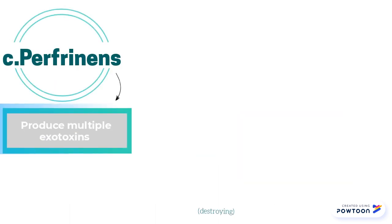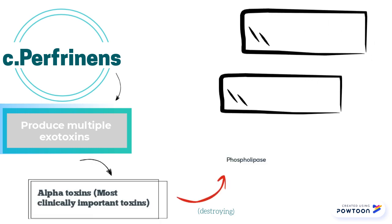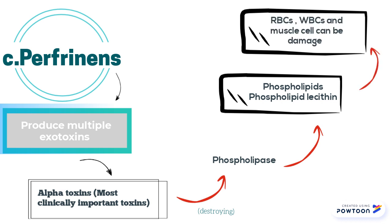Clostridium perfringens is also known for its ability to produce multiple exotoxins. The most clinically important toxin is alpha toxin, which contains a phospholipase that is capable of destroying phospholipids.